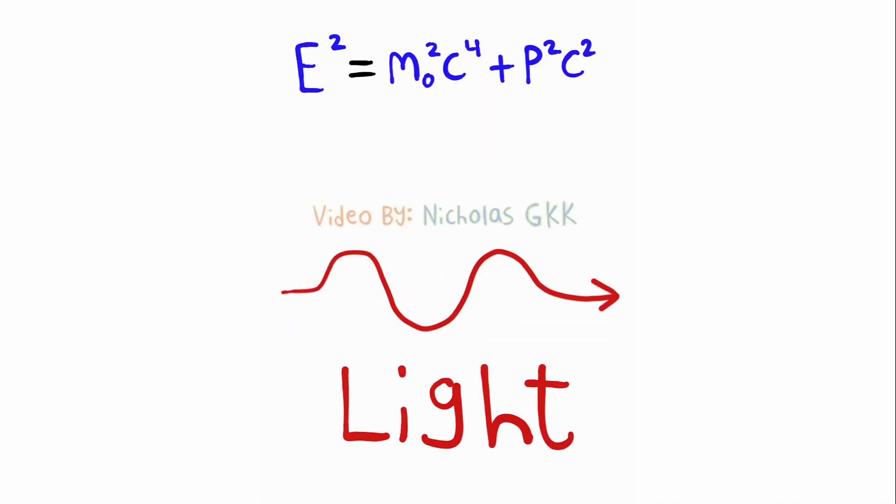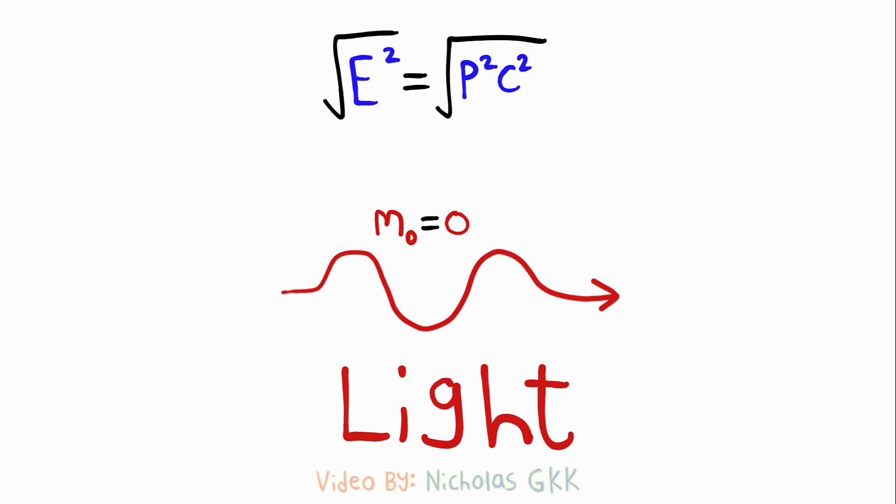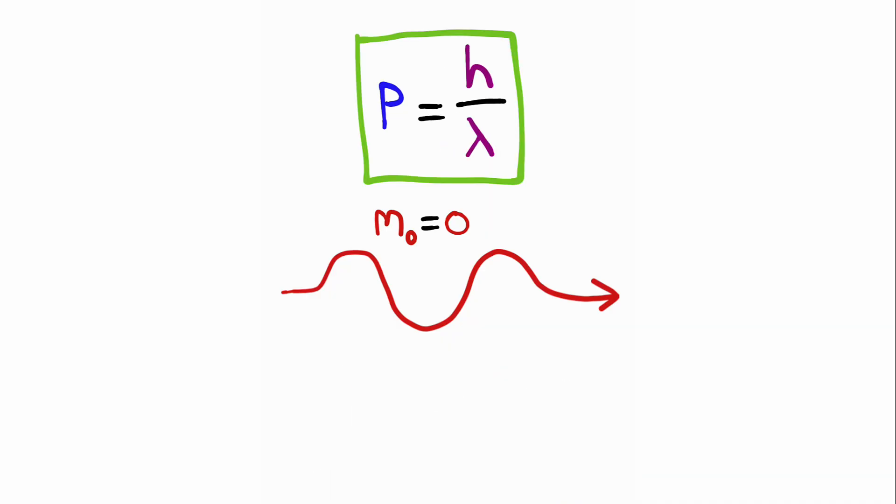Since we know light has no mass, we can just use some algebra to solve for the momentum. And we can also use the equation for the energy of a photon, and this will give us the formula we saw at the start.